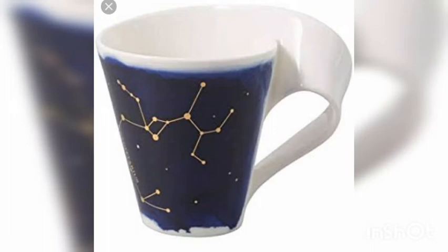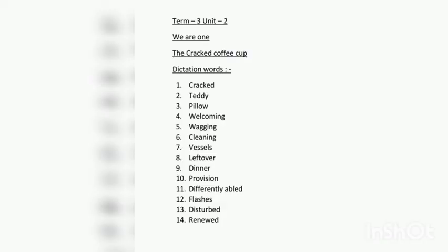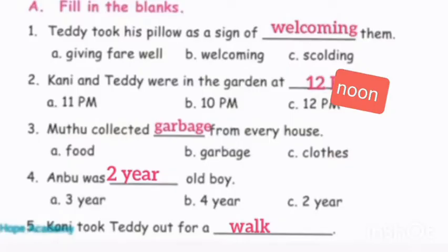Now I will give the dictation words — listen carefully children. First one: cracked, C-R-A-C-K-E-D, cracked. Second one: teddy pillow. Third: welcoming. Fourth: wagging, W-A-G-G-I-N-G, wagging. Then: cleaning vessels, leftover dinner, provision, differently abled, flashes, disturbed, renewed.